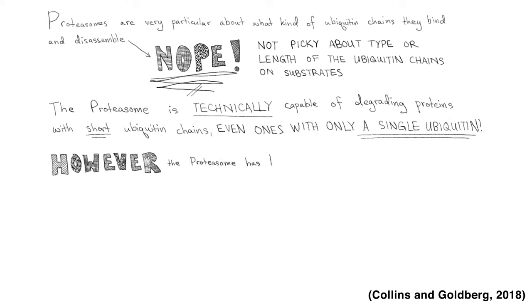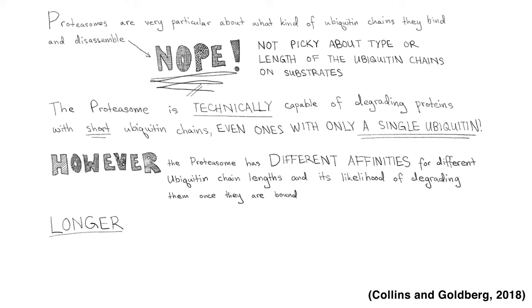However, the proteasome has different affinities for different ubiquitin chain lengths and its likelihood of degrading them once they are bound. The longer the chain, the greater its affinity for the proteasome.